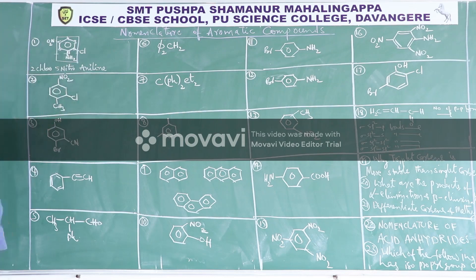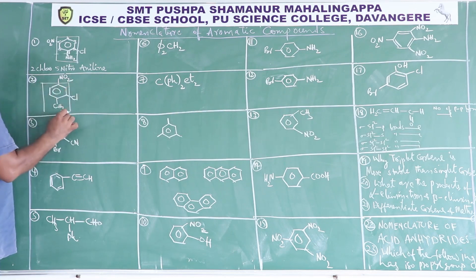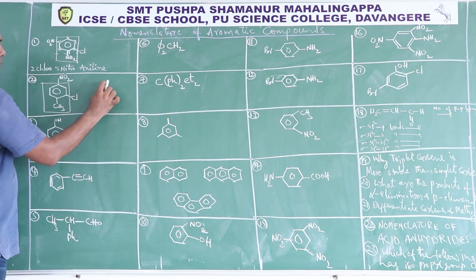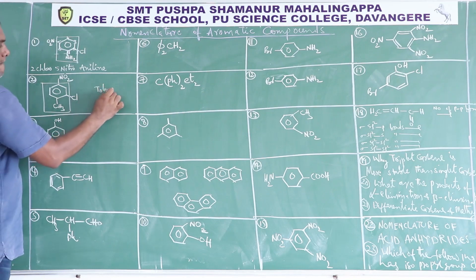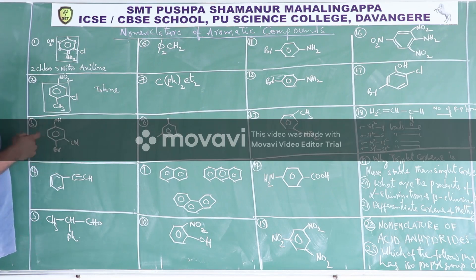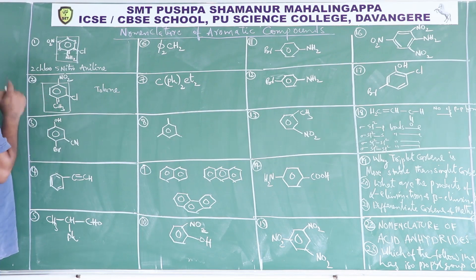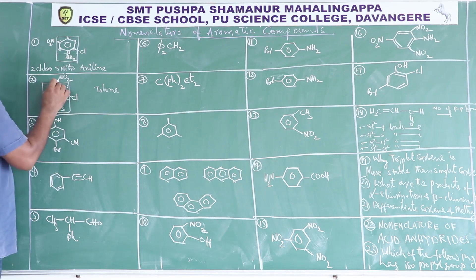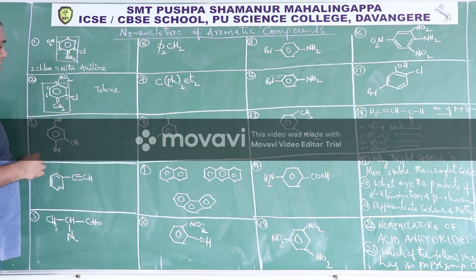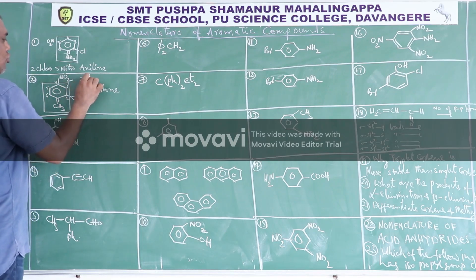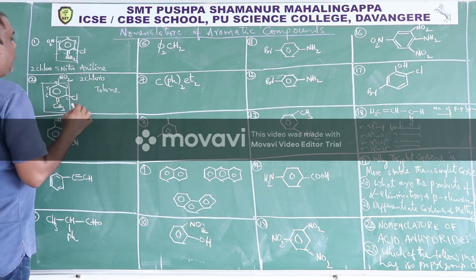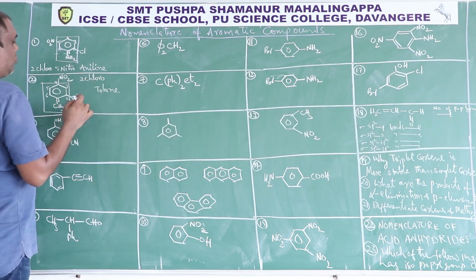Here the base compound is toluene. The substituent of the base compound is given number 1, and numbering is done so that the immediate substituent gets the lowest number: 1, 2, 3, 4, 5, 6. Therefore the prefix is 2-chloro-4-nitro, giving the IUPAC name 2-chloro-4-nitrotoluene.